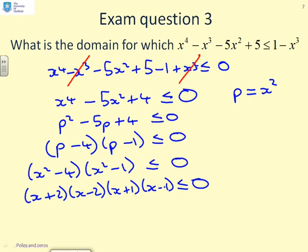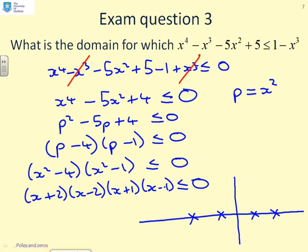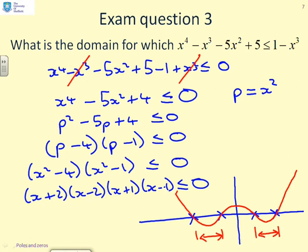Now this is a quartic. If I squeeze in a little sketch, I can see the nature of the solution very easily. I've got roots at 2, 1, minus 1, and minus 2. It's a quartic with a positive x to the 4, so it's positive for large x, and it changes sign every time it goes through a root. The question asks when is this quartic negative or equal to zero. You can see it's in the domain between minus 2 and minus 1, and in the domain between 1 and 2.